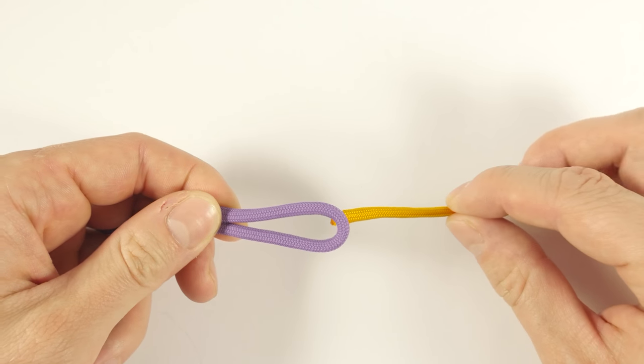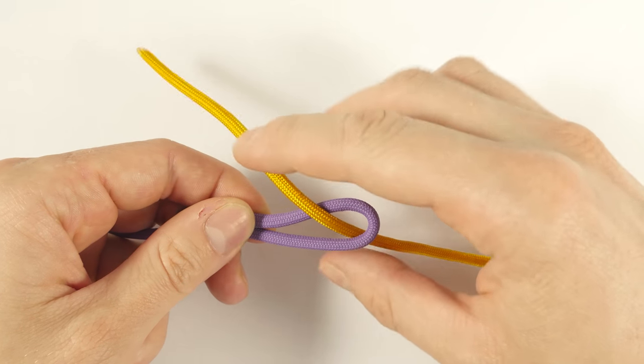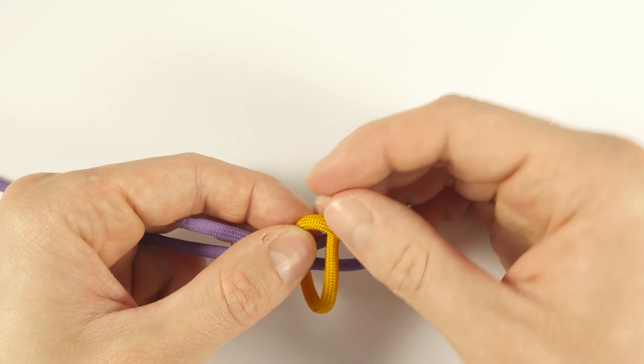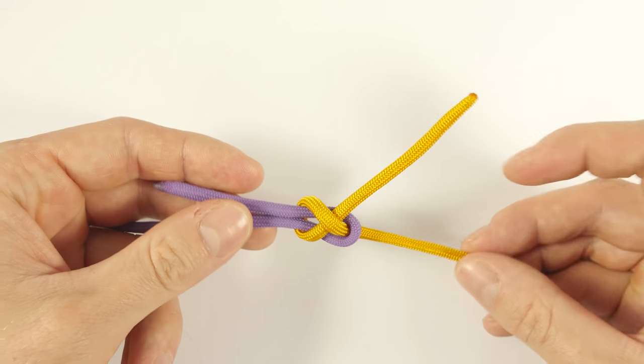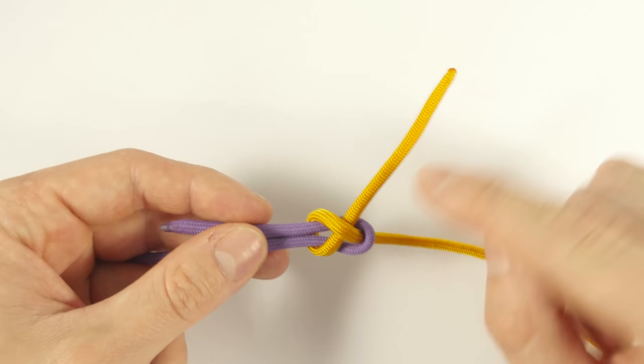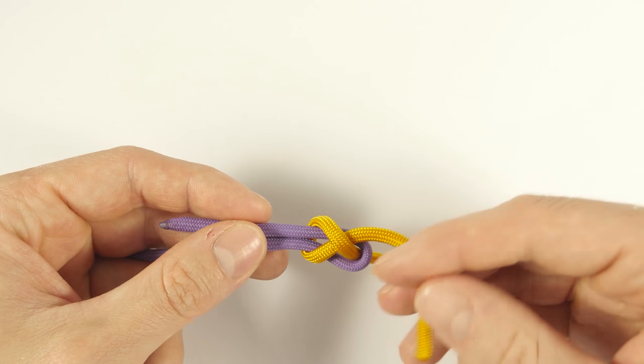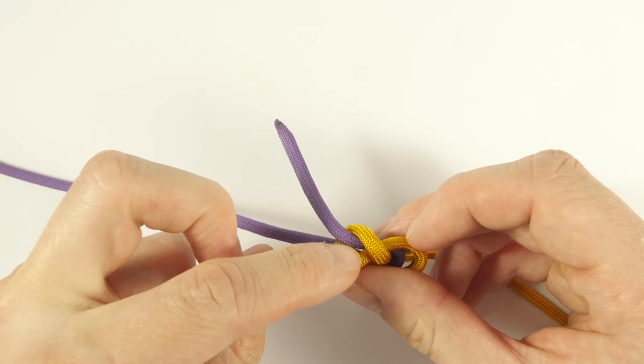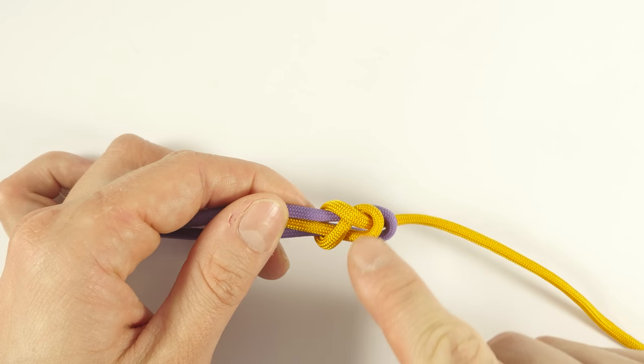With the other end we pass under and through the bight, around it, and under. The one-way sheet bend continues with our working strand passing under this first loop here, creating what is essentially a figure 8 knot.